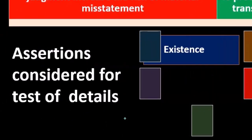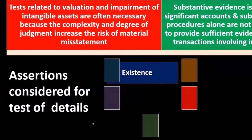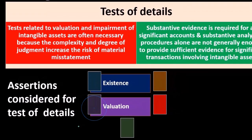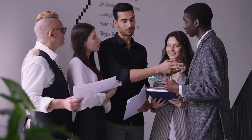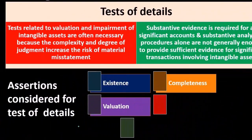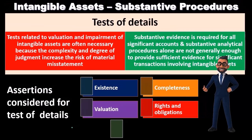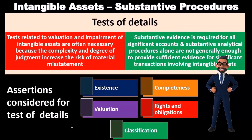The assertion considerations for tests of details typically include existence — we need to confirm intangible assets exist, even though we can't physically observe them as we would with property, plant, and equipment. We also consider valuation, since intangible assets are often unique, such as book rights, copyrights, movie rights, or goodwill for a specific company. Completeness and rights and obligations are important as well — we need to confirm the assets actually belong to the company, especially where there are legal rights related to goodwill or copyrights. Finally, classification is also a consideration.